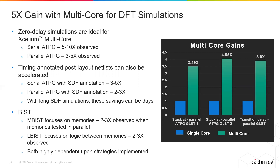A third type of DFT simulation that teams will do are BIST simulations — both memory BIST and logic BIST. There we can see 2 to 3x acceleration, but it's highly dependent on the strategy being implemented. For instance, a memory BIST strategy that tests one memory, then moves to the next, then a third, has a very distributed event profile and does not have high activity. However, a strategy where you're testing multiple memories simultaneously will have far higher activity, and we will accelerate that simulation significantly.